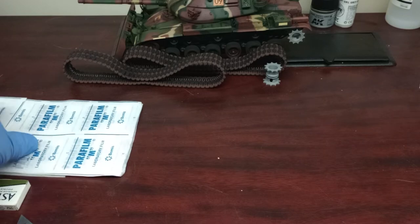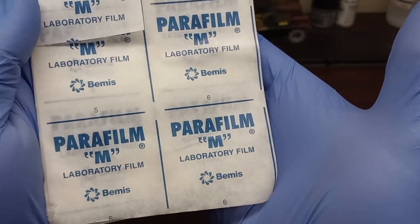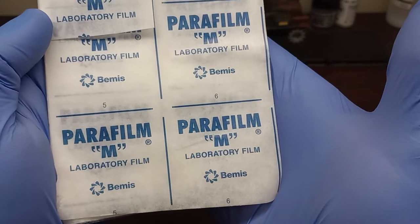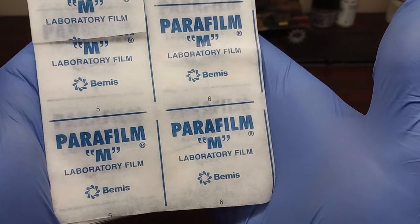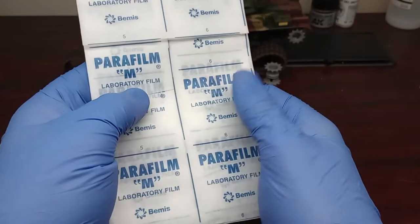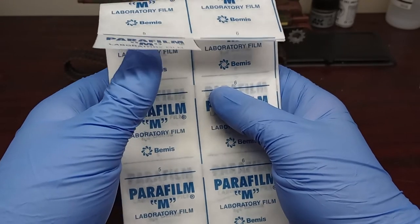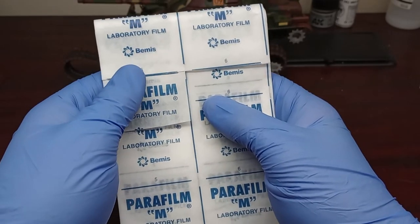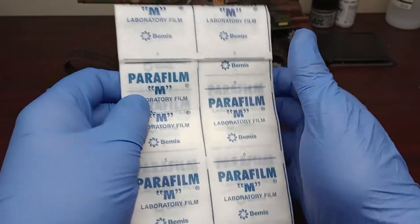So I did some research and I found this material called parafilm M. It's used in laboratory settings to seal vials and things of that nature. Amazon sells it, but they sell it in really big rolls. I found this on Etsy. A lot of horticulture shops sell it, I'm not really sure why, but they sell it in shorter sections.